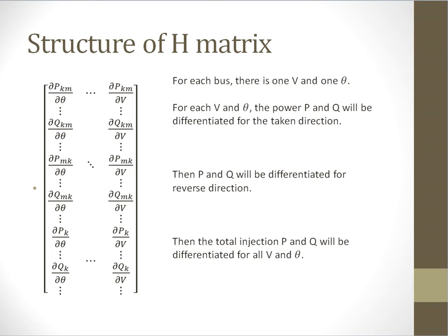Hello everyone, welcome back to power system state estimation. Let's start with the Jacobian matrix. The Jacobian matrix is denoted with H. In the Jacobian matrix, the equations of all measurements are differentiated with respect to all state variables. If there are m measurements and n states, the number of rows will be m and the number of columns will be n.